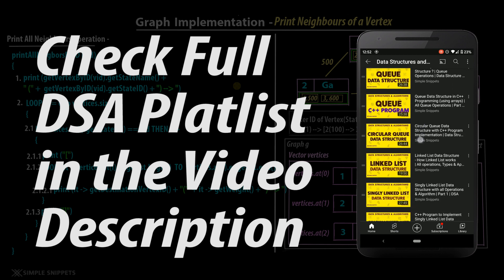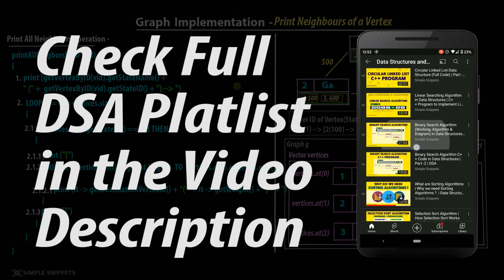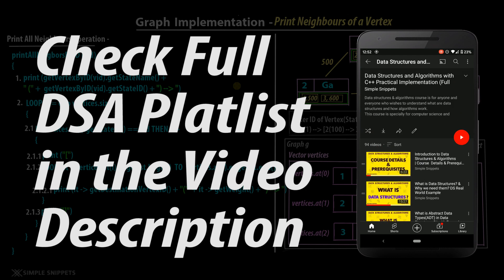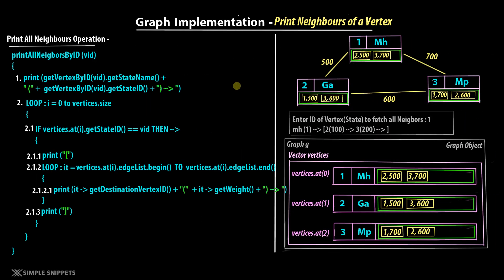In case you've missed that, please check out this graph topic in this DSA playlist in proper sequence. Only then you'll understand every topic in detail, because we are covering one function at a time and developing our own user-defined C++ implementation of the graph data structure. We went step by step, each function at a time in one single video, covering both theory, then behind-the-scenes dry running with diagrams, and then converting that pseudocode into C++ code. In this video, we are going to cover the print neighbors of a vertex operation.